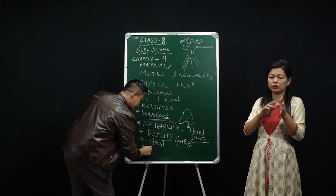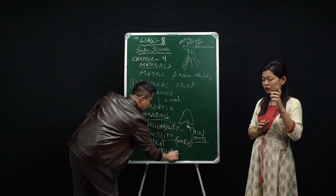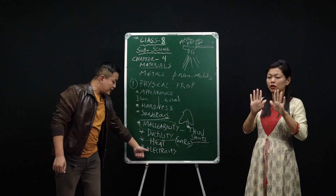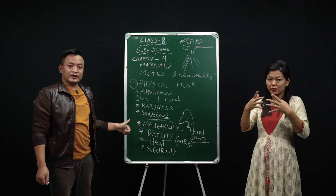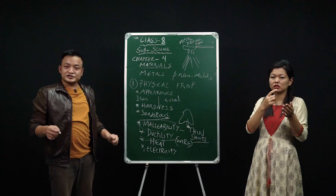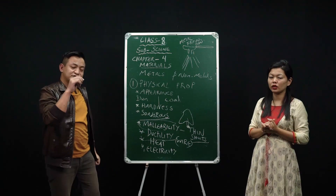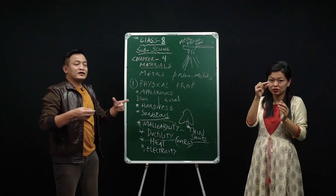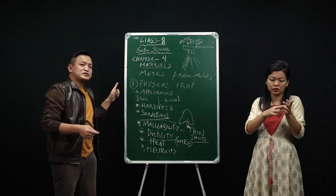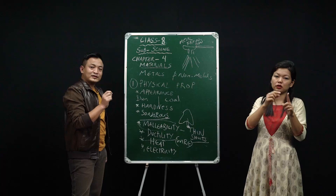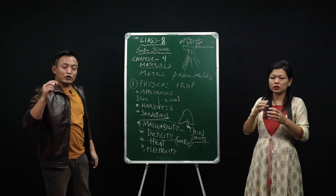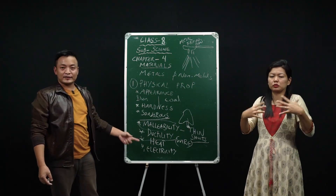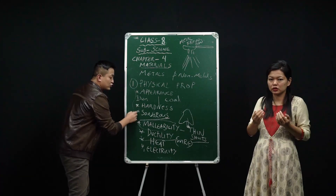The last physical property is electricity. It's similar to heat — metals are good conductors of electricity, whereas non-metals are bad conductors. A common example: an electrician holds a screwdriver on the non-metal side and uses the metal part to check electrical connections. He holds the non-metal part because non-metals are bad conductors of electricity, while metals are good conductors.